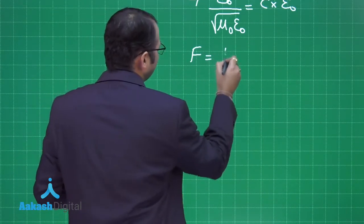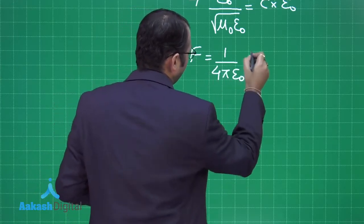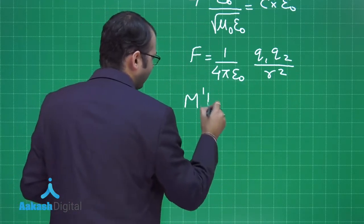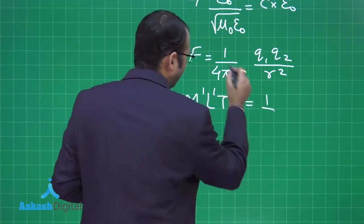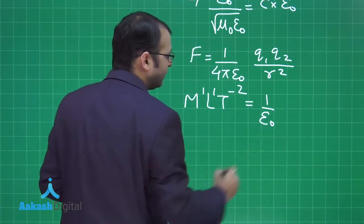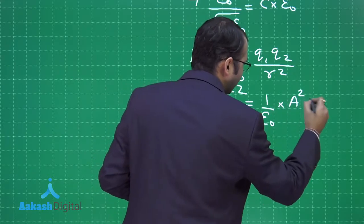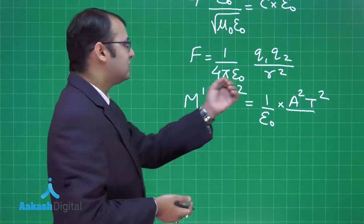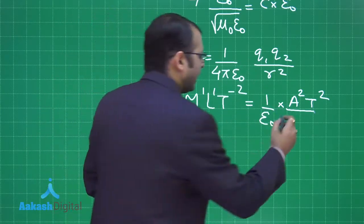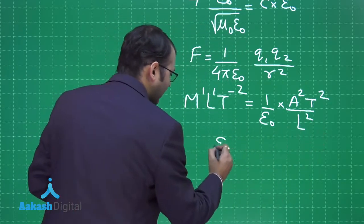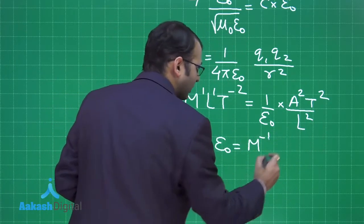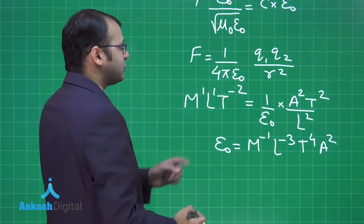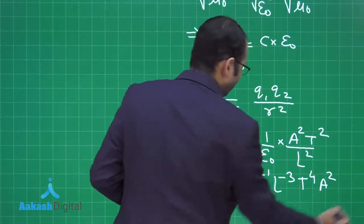From the formula of electrostatics, you have 1 upon 4 pi epsilon 0 q1 q2 upon r square. The dimension of f is m1 l1 t minus 2. 4 pi being a constant is dimensionless. This is 1 upon epsilon 0. q1 q2 can be written as a2 t2 as charge has dimensions of a t. This is l2. Solving this, I get epsilon 0 as m minus 1, l minus 3, t4, a2. This epsilon 0 can be put in the equation we already found.